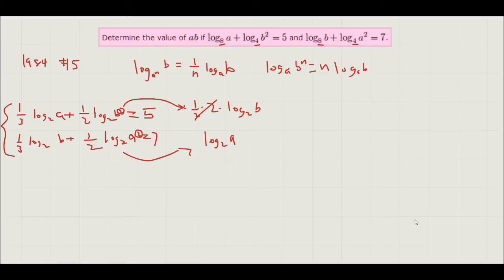So our system of equations turns into 1 third log base 2 of a plus log base 2 of b equals 5. And 1 third log base 2 of b plus log base 2 of a equals 7.